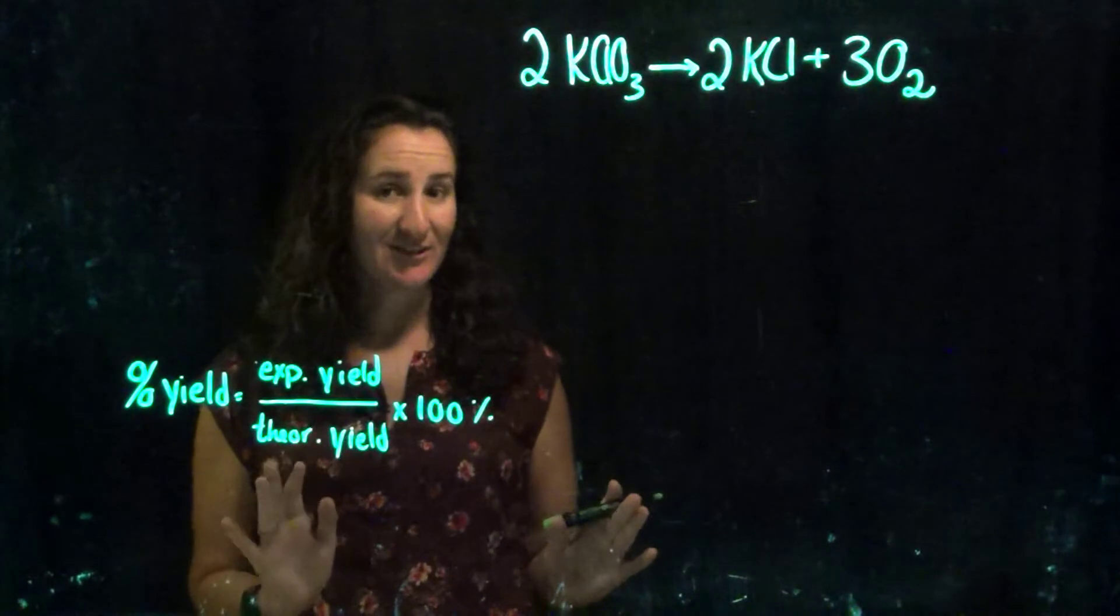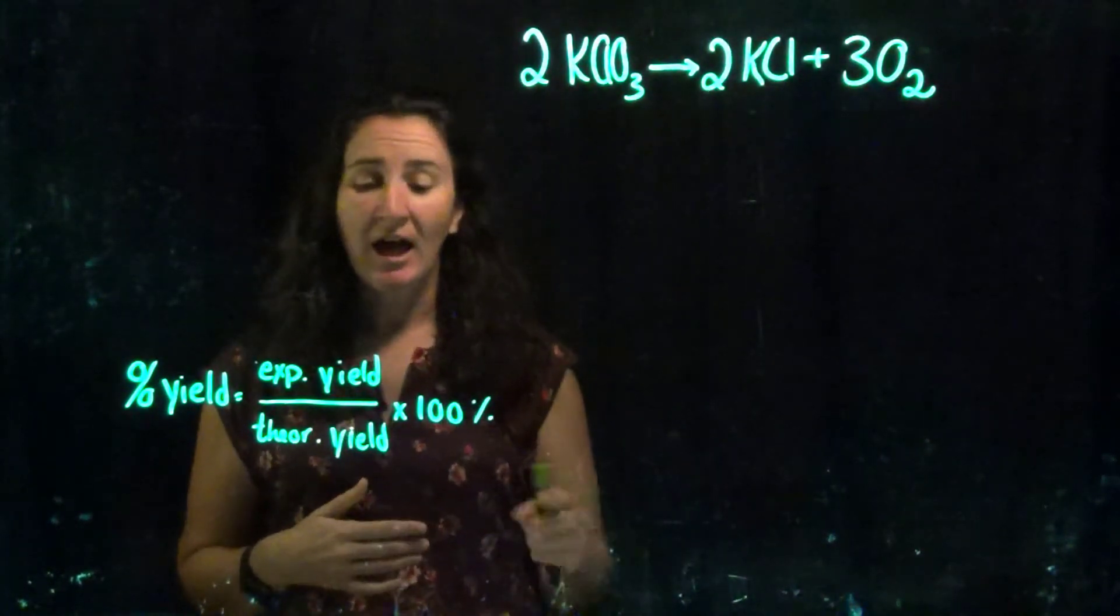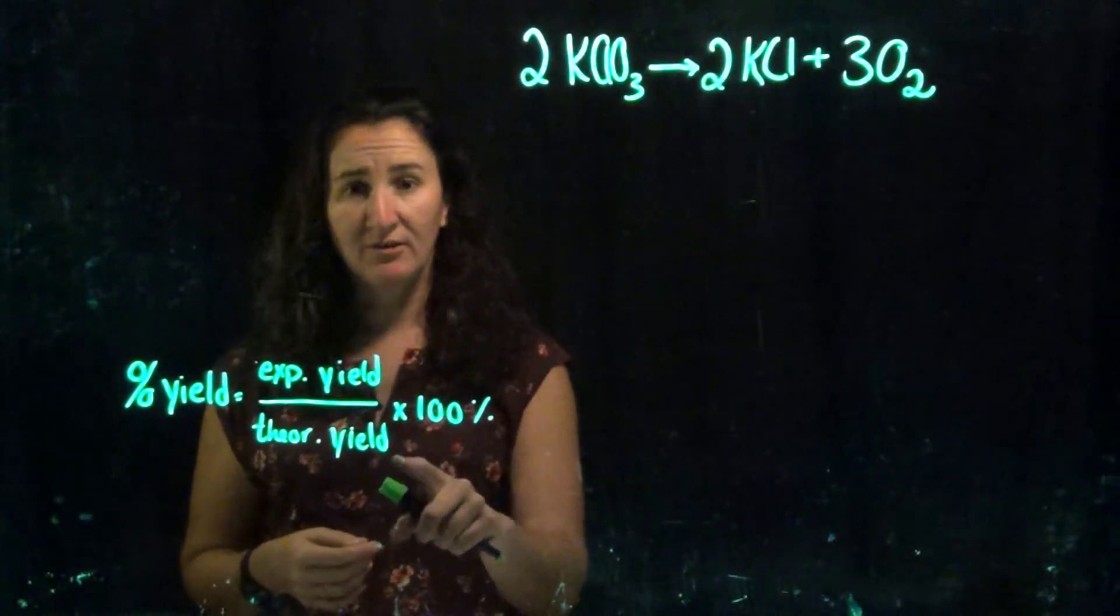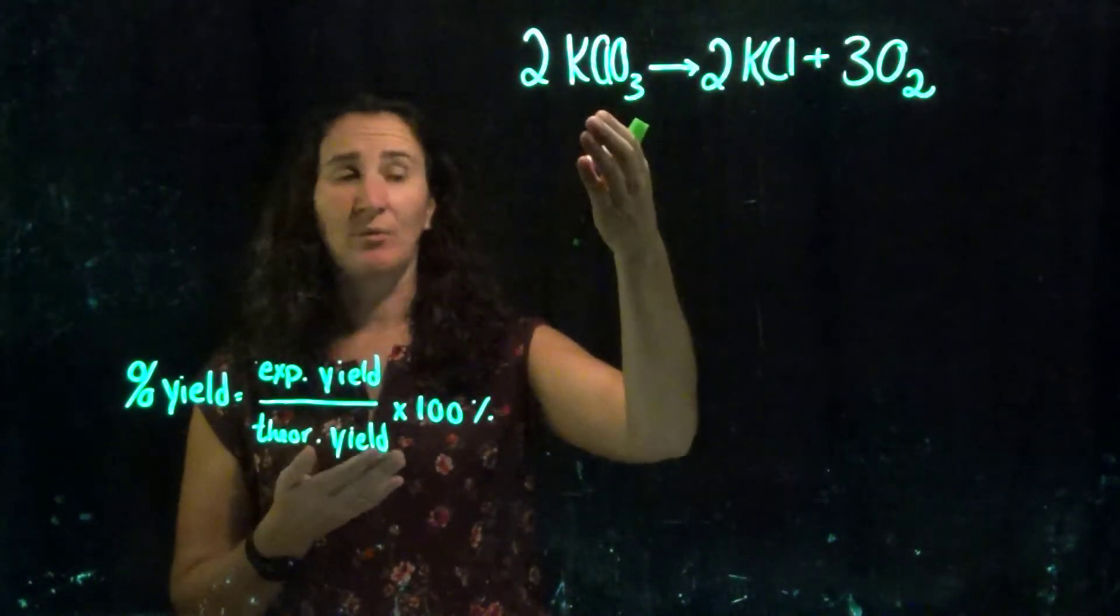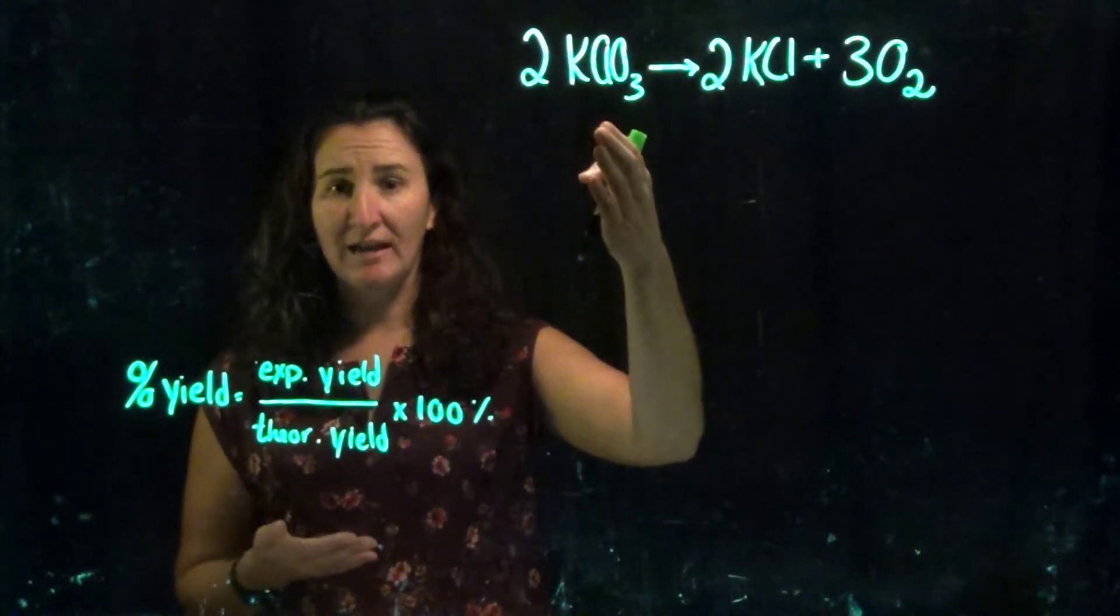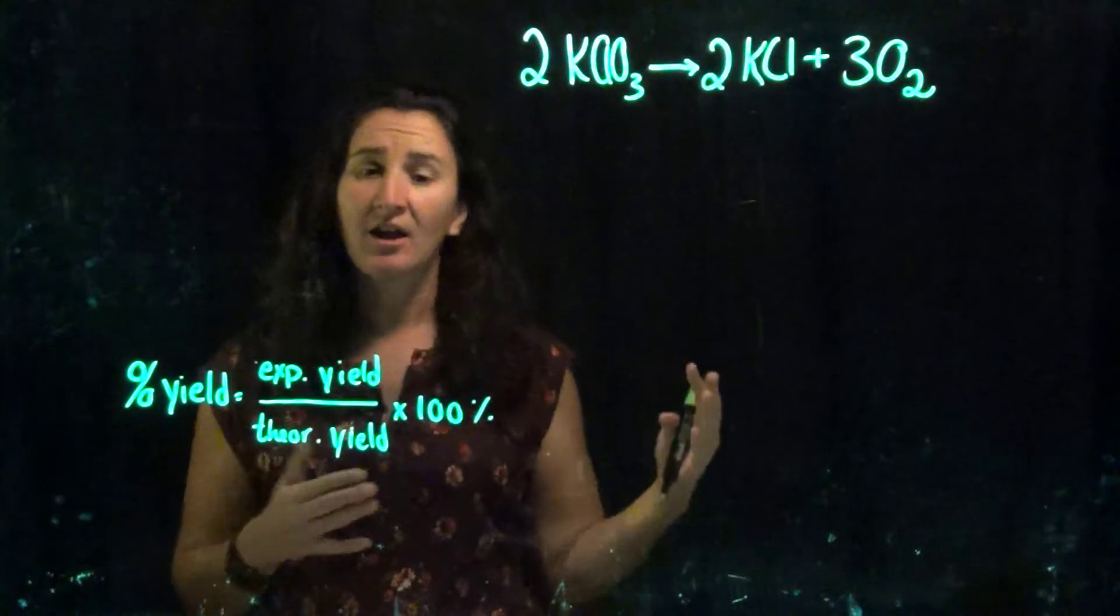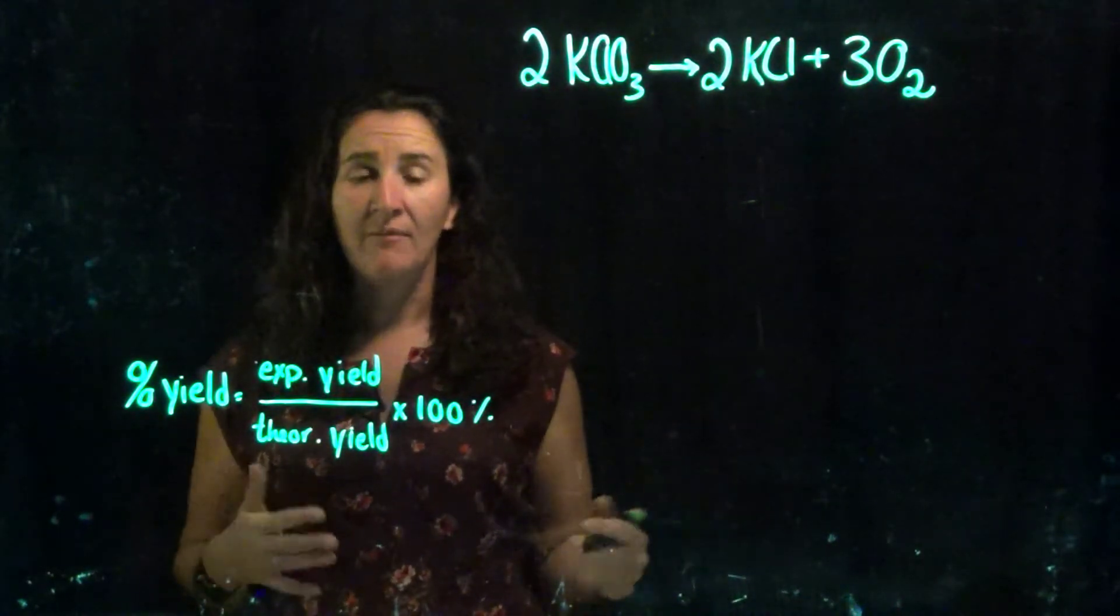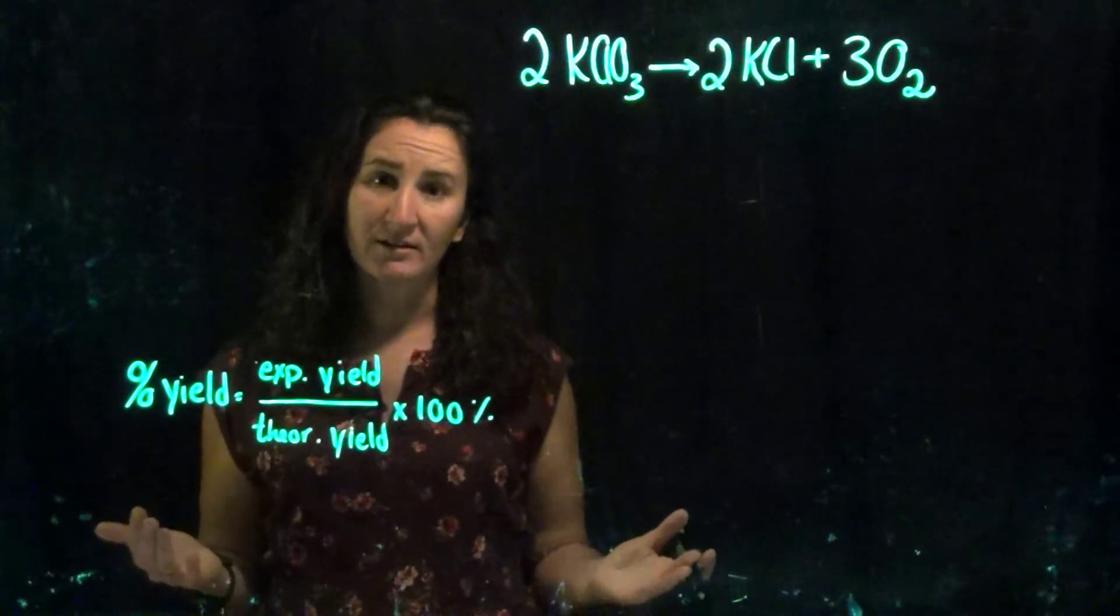So what is percent yield? Percent yield is the idea that when I go in the laboratory I should be able to figure out my theoretical yield based on my starting materials. So if I only have one gram of potassium chlorate, how much potassium chloride should I be able to generate from that one gram? And so that's your theoretical yield. That's all those molar conversions that we've done so far in this course.